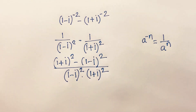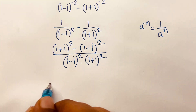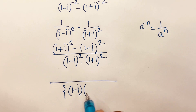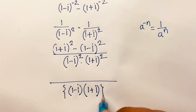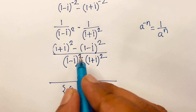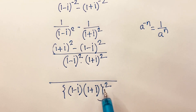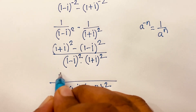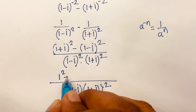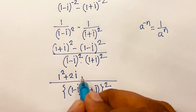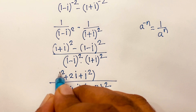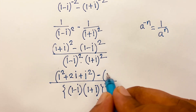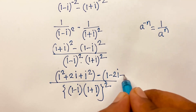I can write the denominator as [(1-i)(1+i)]². Now I expand the numerator using the identities (a+b)² = a² + 2ab + b² and (a-b)² = a² - 2ab + b².